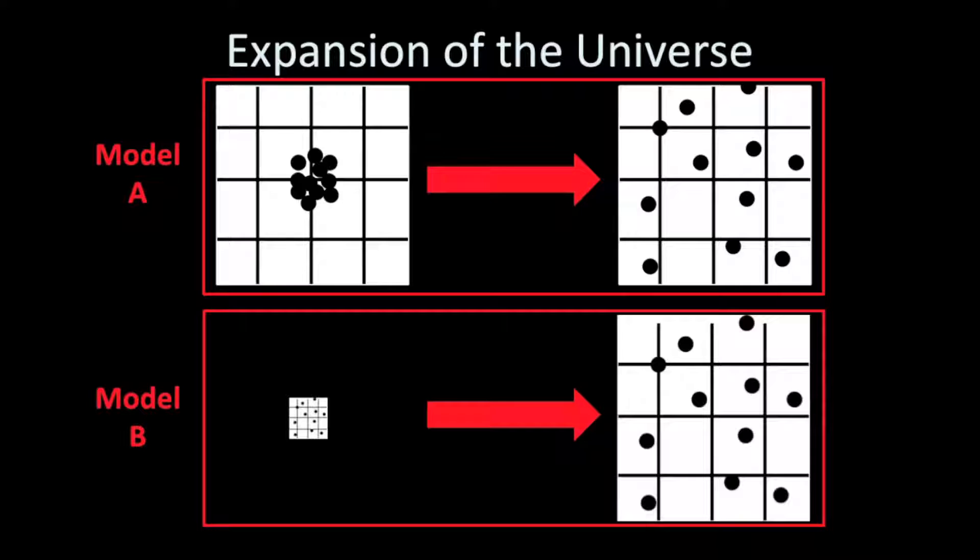Which model A or B shows a universe that is not expanding over time? If you answered Model A, you would be right. Model B shows a universe that is smaller in the past and larger later on. Which model A or B shows galaxies moving through a pre-existing space over time? If you said Model A, you would be right. Model B shows galaxies moving with space as it expands.